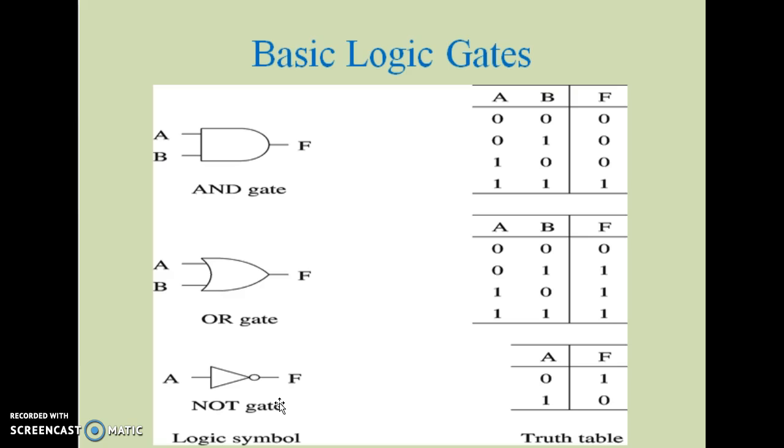NOT gate is the third basic gate in which it has only one input and one output. It is also called an inverter as output is inversion of the input. If input is zero, output is one and if input is one, output is zero.